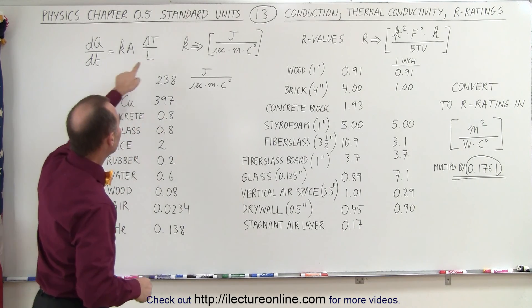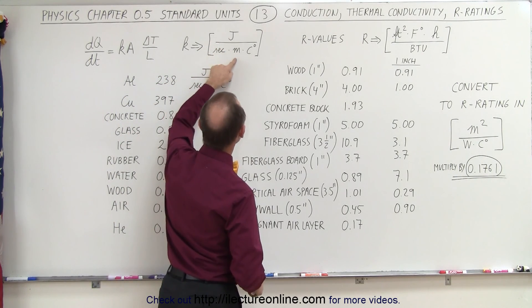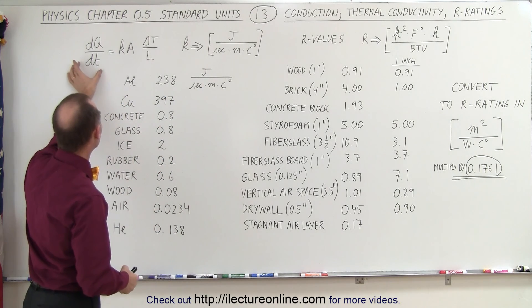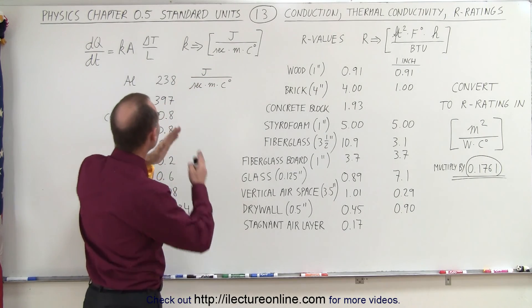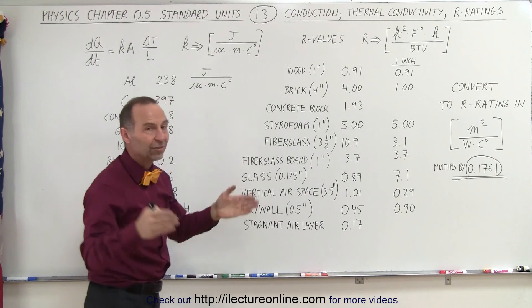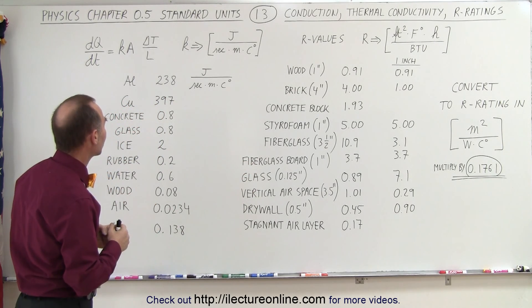The conductivity constant has units of joules per second per meter per centigrade degree. Joules per second is the amount of heat per unit time, which is delta Q delta T. Per meter means the length of the path, and per centigrade degree indicates the temperature difference on both sides of the object.